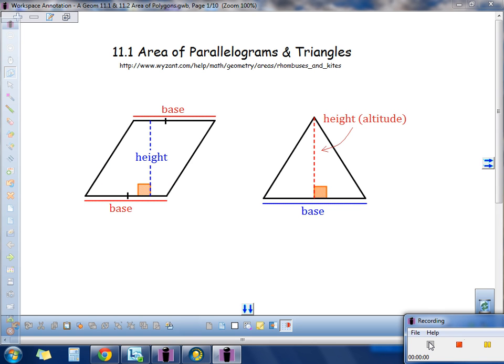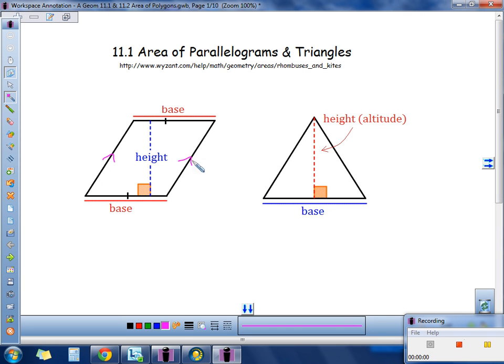In today's lesson we're going to talk about area of parallelograms and triangles. It's 11.1. I've shown two quick pictures of the basic types of these shapes. This first one over here is a parallelogram. Typically on a parallelogram, opposite sides are going to be parallel. So these sides would be parallel, and then these bases would also be parallel.